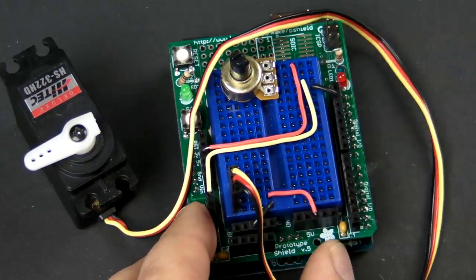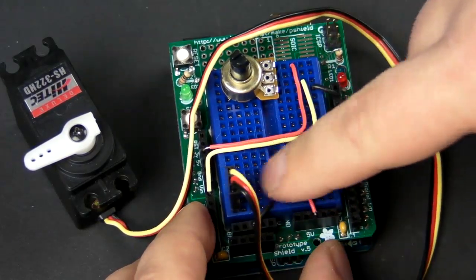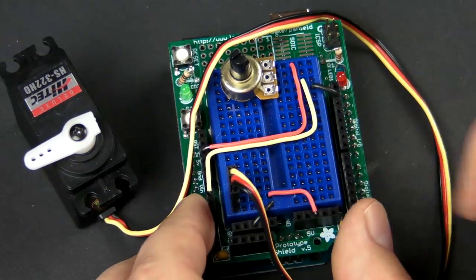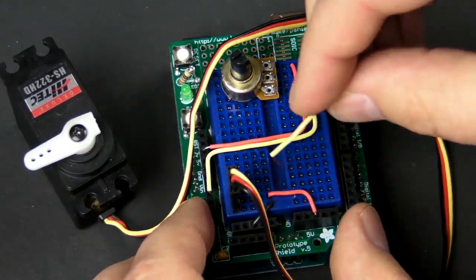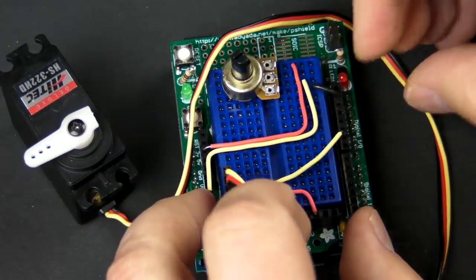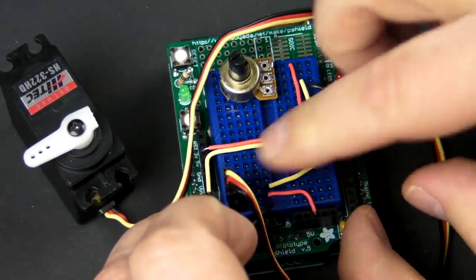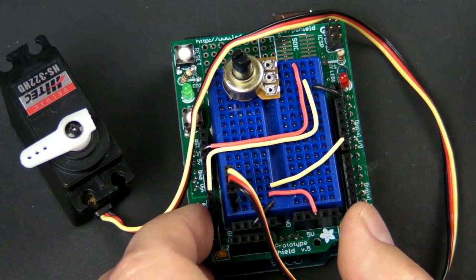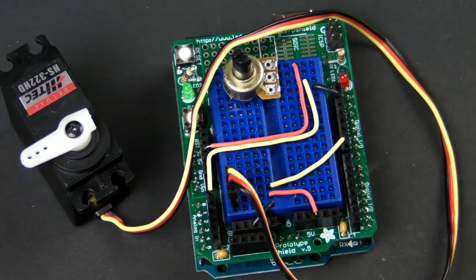And the last one we need to connect is the yellow to a signal. Now we need that one to be connected to a digital pin, so we're going to use pin nine over here because that's the pin that's used in the example that comes with the Arduino software. And that's it, we're done. Let's give it a test and go over the software.